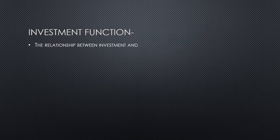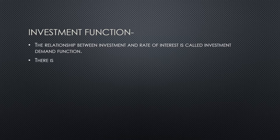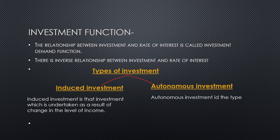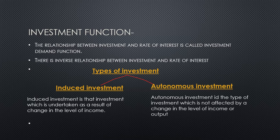Unlike the consumption function, in the investment function there is an inverse relationship between investment and the rate of interest. There are two categories of investment in the investment function: induced investment and autonomous investment. Induced investment varies with the level of income, while autonomous investment does not change with the income level.